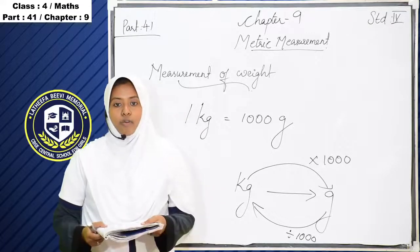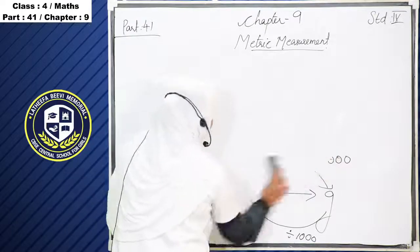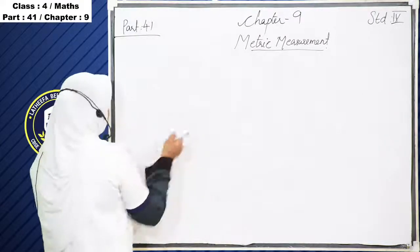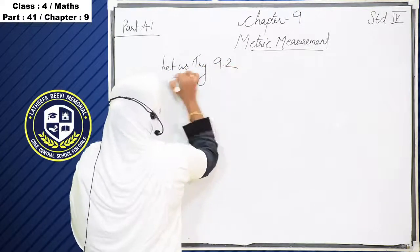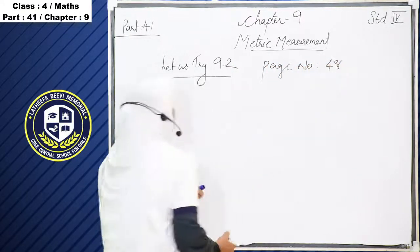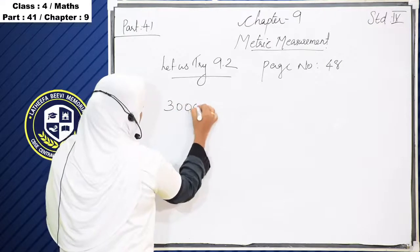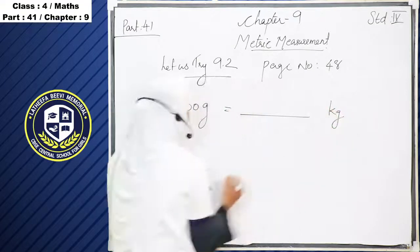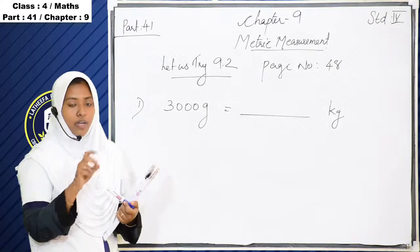So take your textbook page number 48. The first question: 3000 gram is equal to dash kilogram.